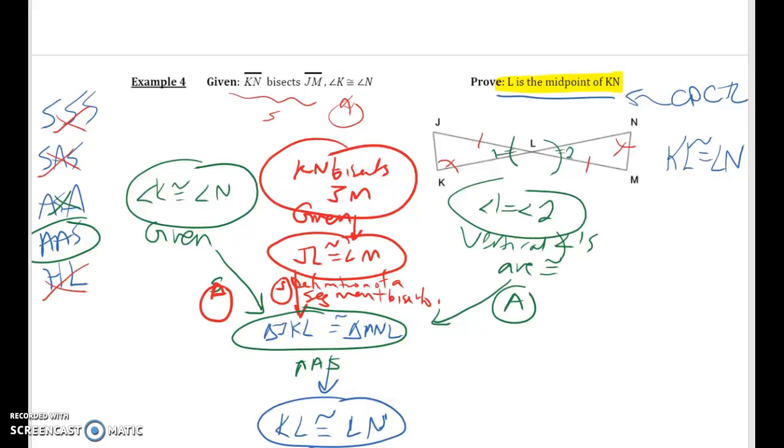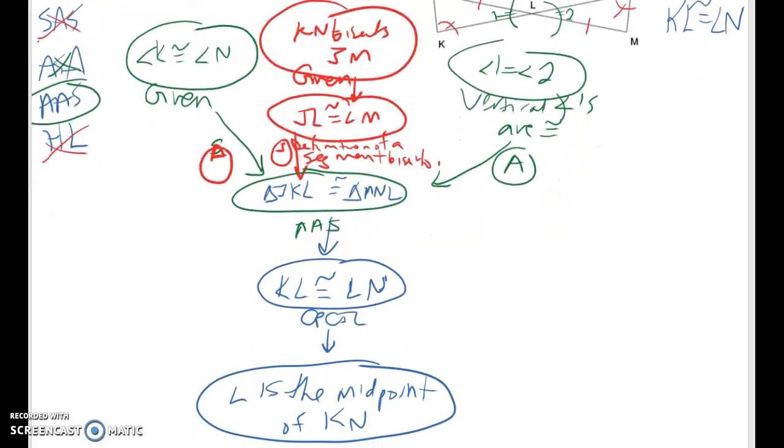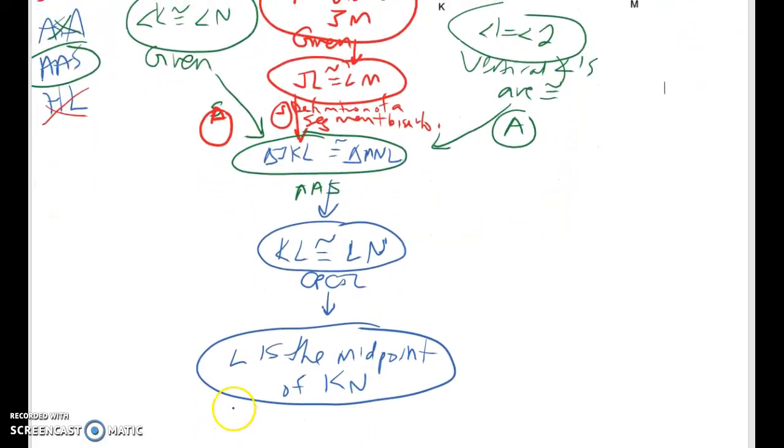So because we've proven these two triangles are congruent, we can then talk about KL and LM. They are corresponding parts of those triangles we've shown are congruent, which is what CPCTC stands for. And now we can talk about L being the midpoint of KN, and that is the definition of a midpoint: it divides a segment into two congruent parts.